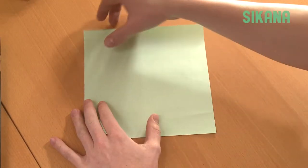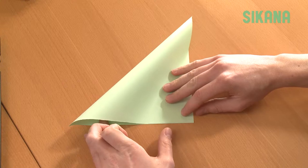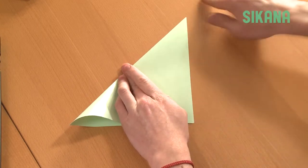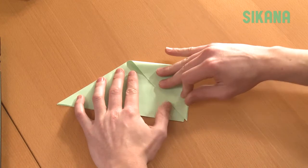Take a square sheet of paper and fold it in half diagonally. Next, fold the tip down to this point.